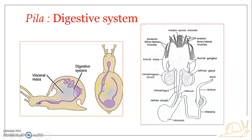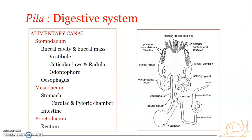Here you can see the buccal cavity, esophagus, and then the stomach region — it gets deflected and bent. The intestine is brought forward again. The entire alimentary canal can be divided into three regions: the foregut region, the midgut region, and the hindgut region.